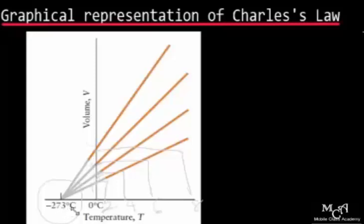The absolute temperature value is minus 273 degrees Celsius. We will look at examples to illustrate and understand Charles' Law, just as we did for Boyle's Law.